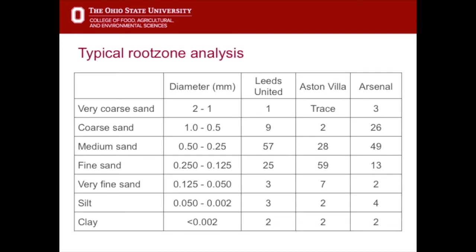This shows some of the root zone material sands used in football clubs in England. At Leeds United, 57% of that root zone mix is medium sand and 25% is fine sand, so the majority is medium fine. At Aston Villa it's similarly medium fine at 59% and 28%, and then at Arsenal the root zone material is more of a medium coarse sand.